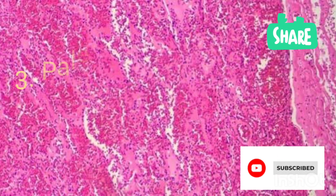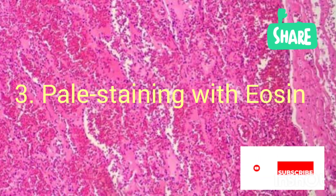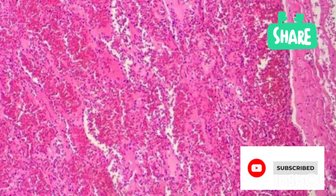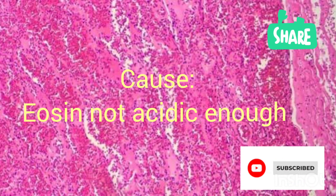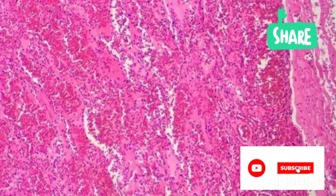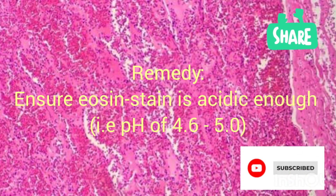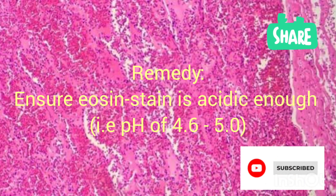Another problem — number three — is pale staining with eosin. Eosin is the acidic component, staining the basic components of the cell, which is the cytoplasm. So when the cytoplasm is pale, one cause could be that the eosin is not acidic enough. You could make it acidic by adding acetic acid.